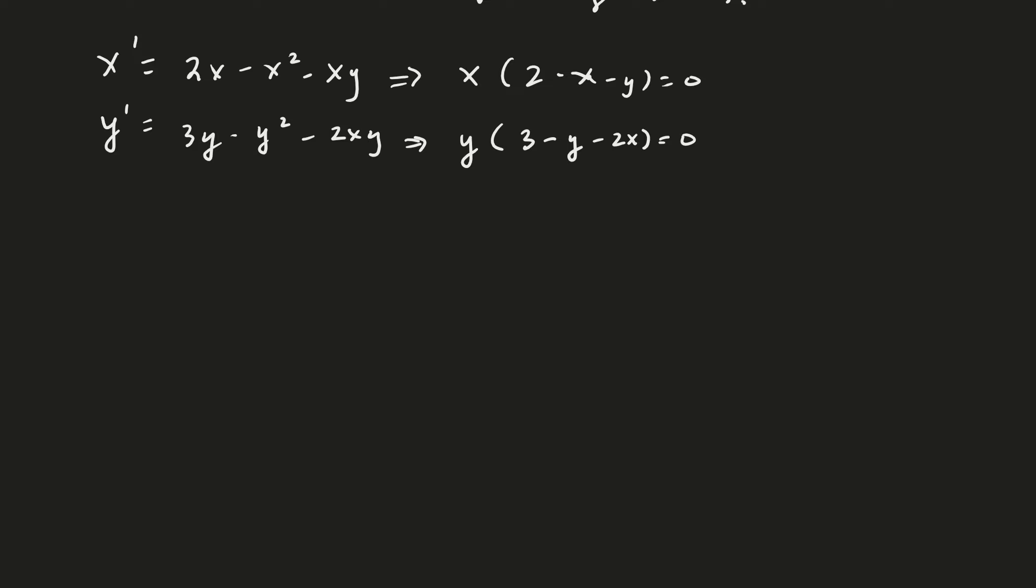So now I have four curves that I want to look at: x equals 0, y equals 2 minus x, y equals 0, and y equals 3 minus 2x. Now remember, when one of the top curves is equal to 0 and one of the bottom curves is equal to 0, then you have an equilibrium solution.